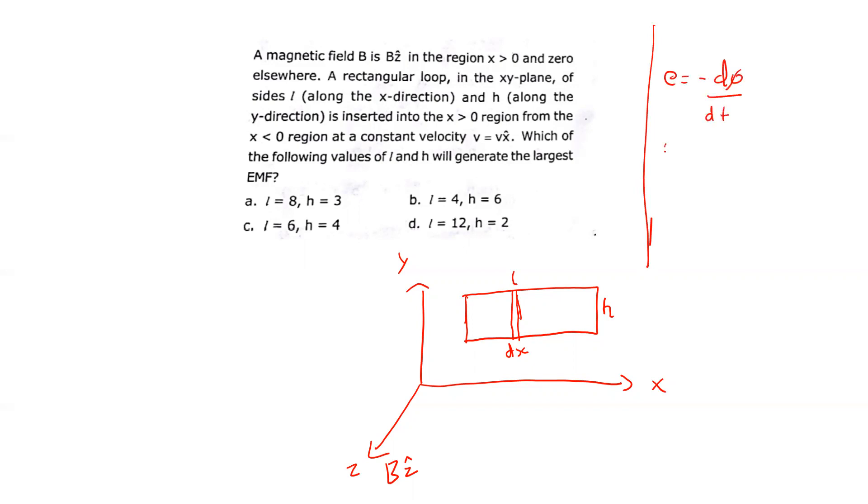Φ is the flux, which is the magnetic field into the area. Since H is constant, we can write dΦ as B·dA, where dA = H·dx.